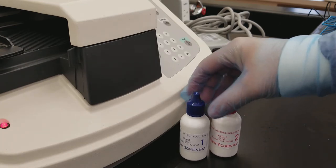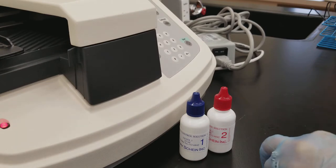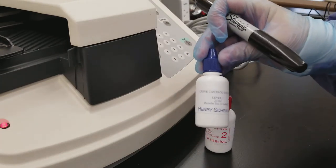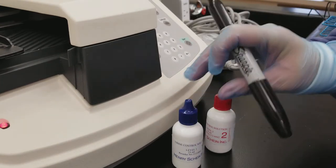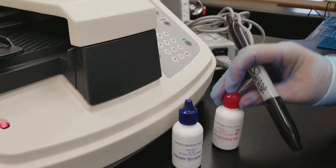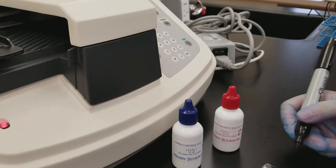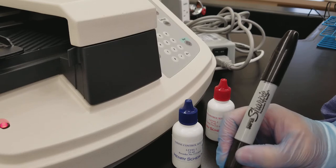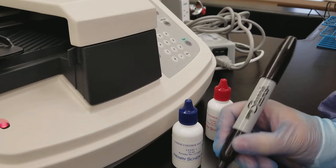So this is external QC. It's a liquid, and you have two levels here. Level one is usually the normal, and level two is usually the abnormal. So usually in QC, you're going to end up seeing that the higher the QC level, usually that's the abnormal. So this is QC level one and QC level two.